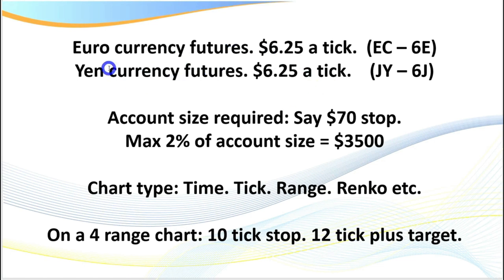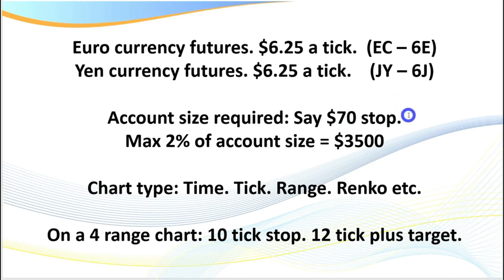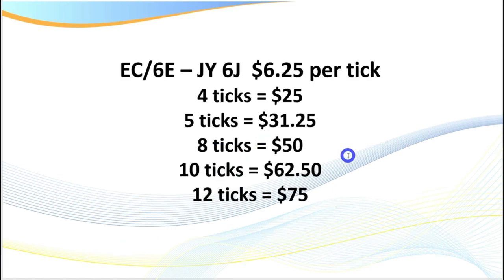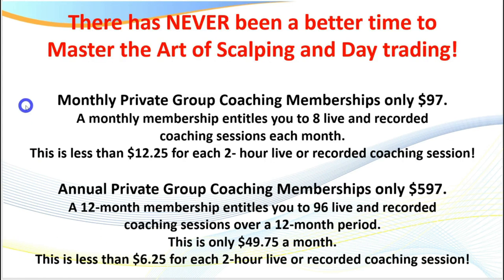You've also got the currency futures. The British pound is really good — with a seventy dollar stop, which is an eleven-tick stop, you need around three thousand dollars in your account. With targets of 10 ticks at $62.50 to 12 ticks, you get these sorts of moves every day in these markets. I'm going to show you some handouts and quickly go to the charts as well.